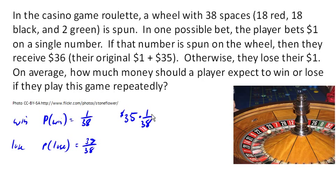We're going to add to that the other outcome, which is losing. And that outcome has a value of negative $1. In other words, we lose a dollar, and that happens with probability 37 out of 38.